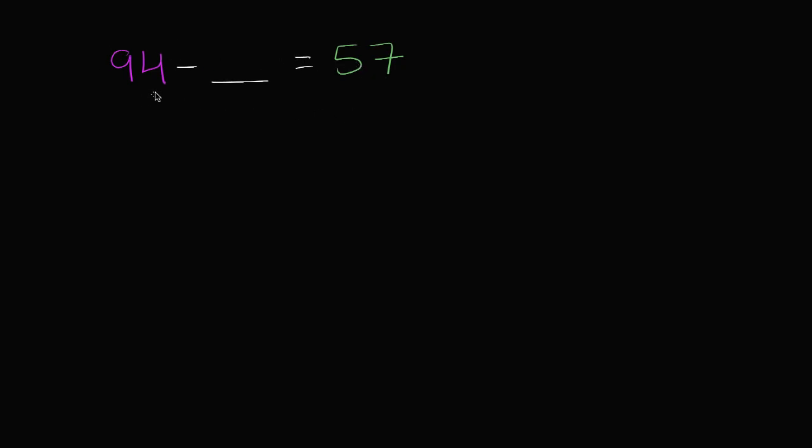Well, I could do it in a similar way, I'm subtracting this time, where I could keep subtracting numbers that make the math easy in my head until I get to 57. And this is actually how I would do it in my head. I would start at 94. And then I would subtract four to get to 90. So that's 90 right over there.